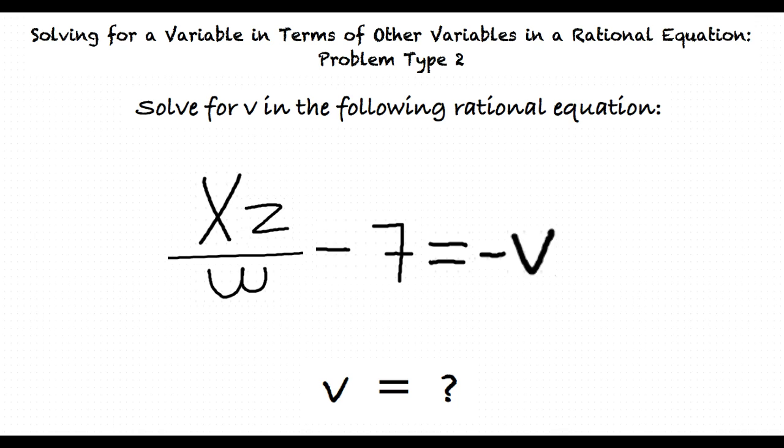That's not our final answer just yet. Dividing both sides by negative 1 will result in our final answer of v equals negative xz over w plus 7.